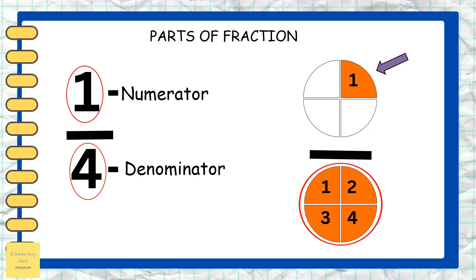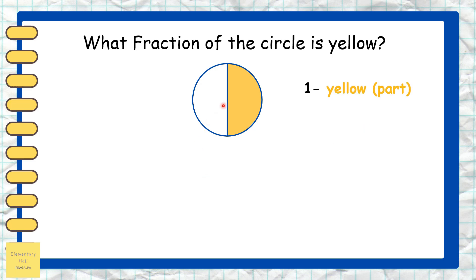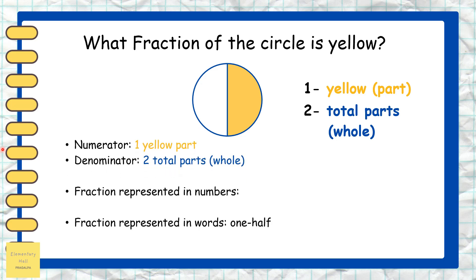Shall we practice some fractions? What fraction of the circle is yellow? We have one yellow part and two total parts in the whole. The numerator is one yellow part, and the denominator is two total parts. The fraction represented in numbers is one by two, and in words it is one half.